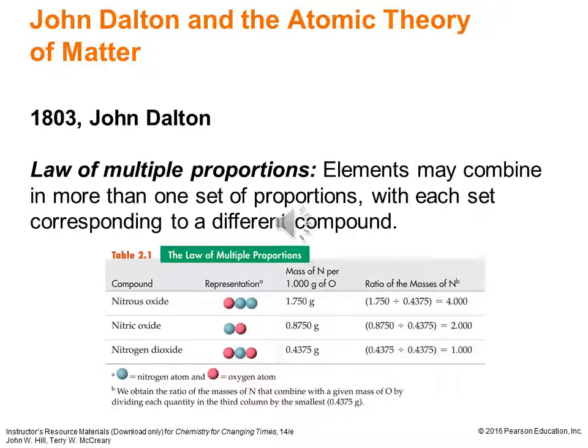Now with Dalton, we're going to start to put these laws together in a meaningful way as the first scientific attempt at atomic theory. We had atomic theory back with Democritus and Leucippus, but it wasn't a scientific theory because it wasn't based on experiment. Dalton, in 1803, gives us the law of multiple proportions: elements may combine in more than one set of proportions, with each set corresponding to a different compound. Previously with lead sulfide, we talked about them always coming together in a definite proportion, but now with nitrogen oxides, we can put them together in multiple ways.